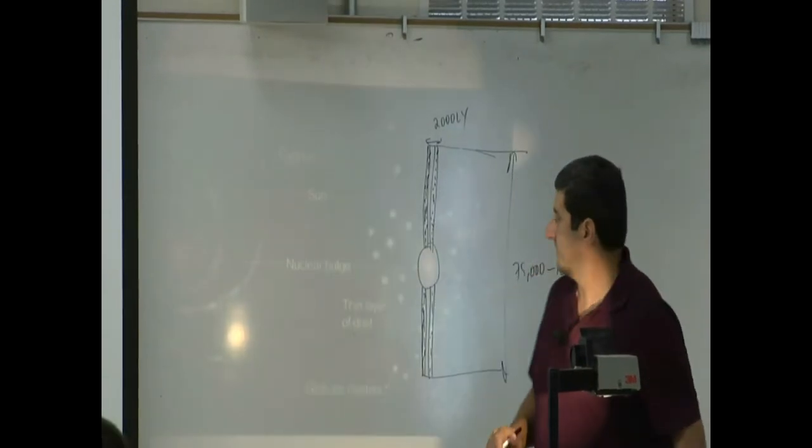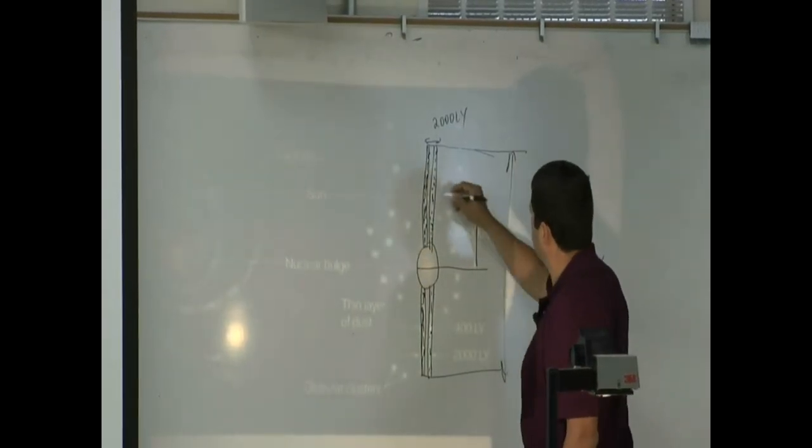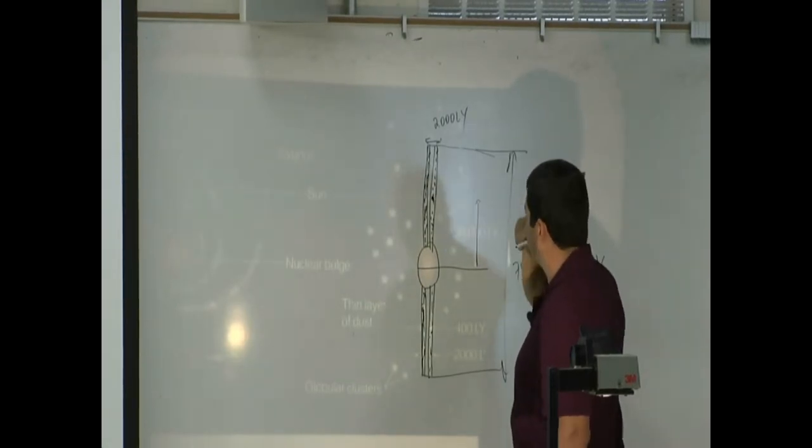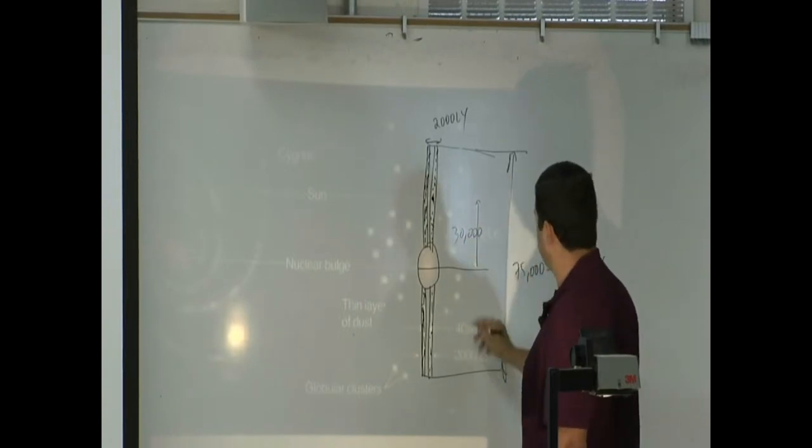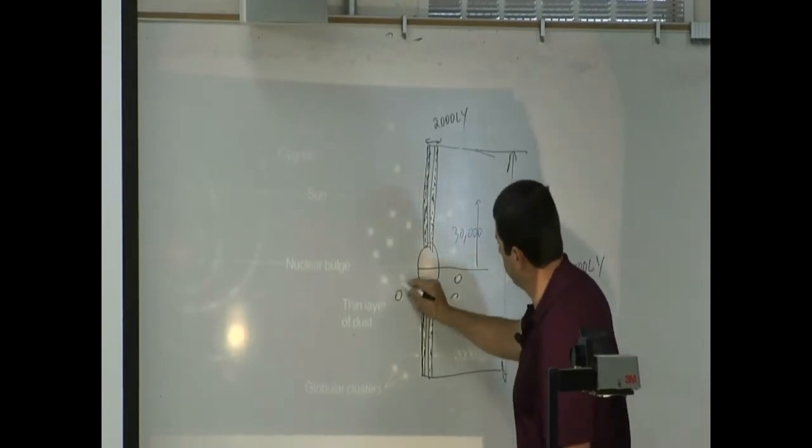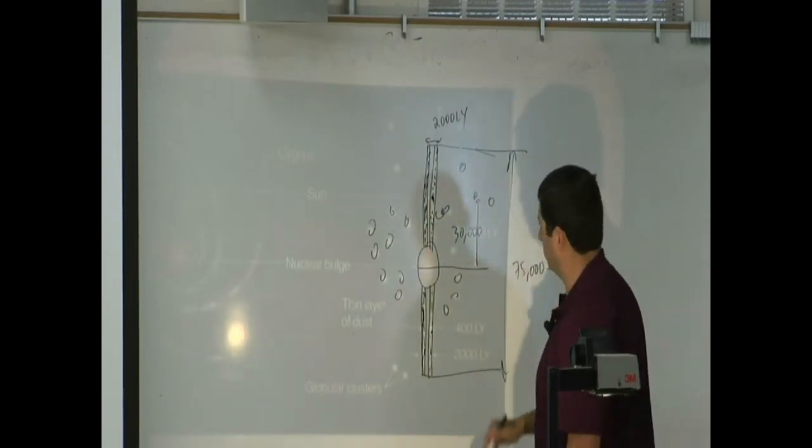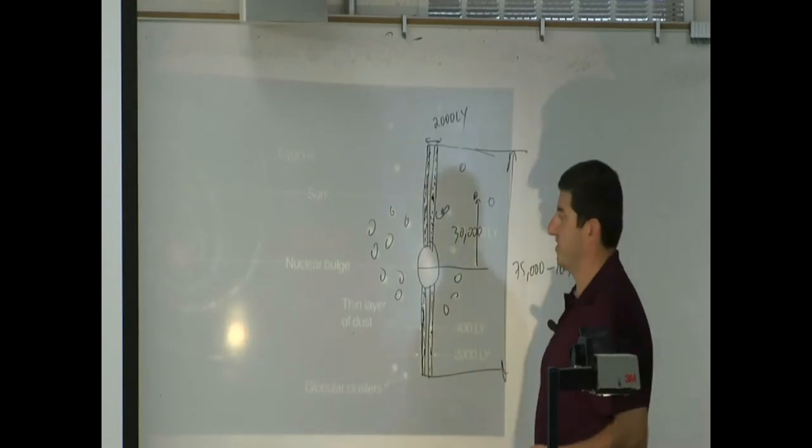Distance of the sun from the center, the sun is here, is going to be 30,000 light years. And then you've got the globular clusters that are over here. So the globular clusters are going around the center.